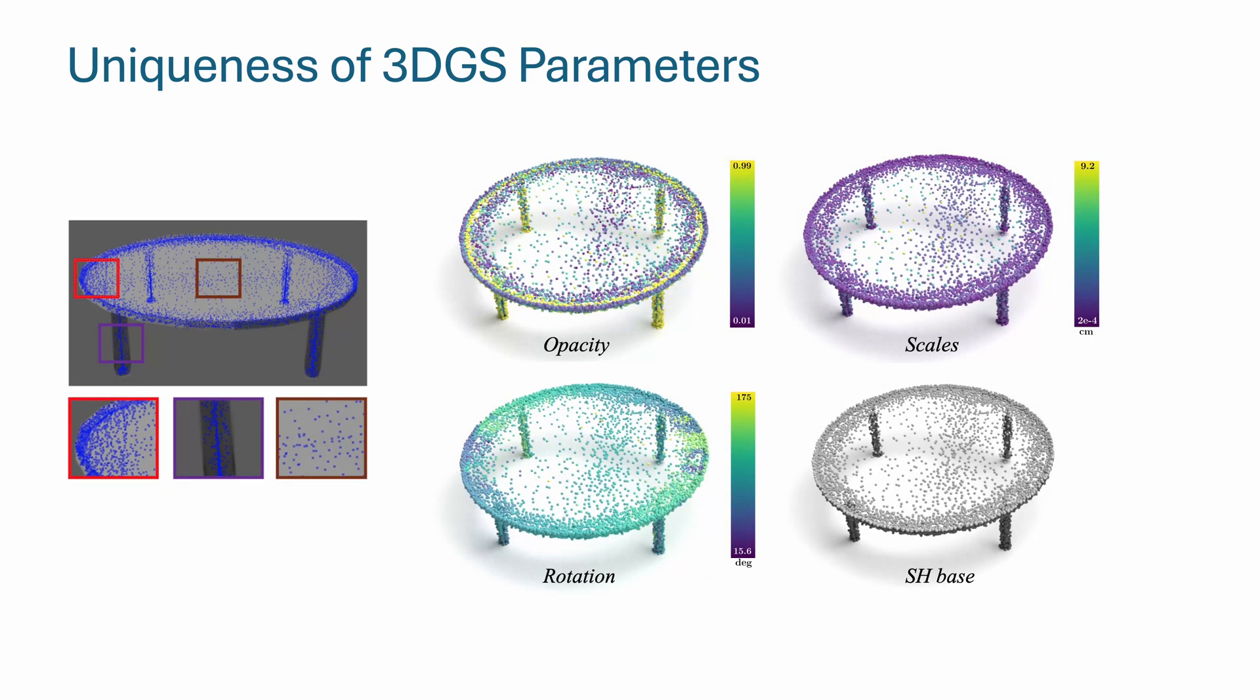If we look at other parameters - opacity, scale, and rotation - here colorized separately based on their values, it's clear the high complexity of the distribution with respect to spatial dimensions.